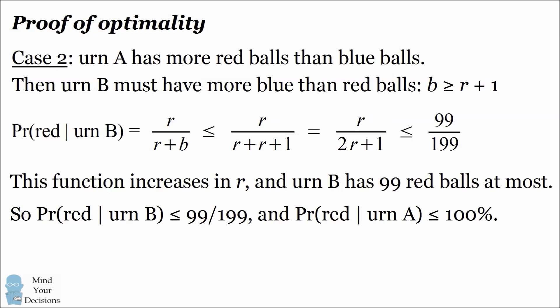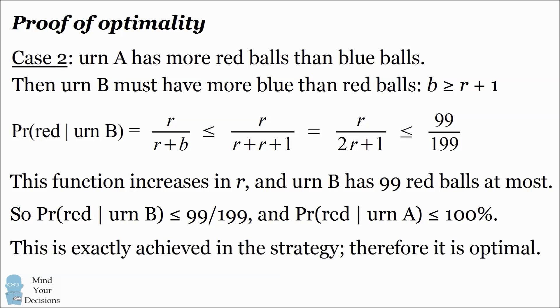And naturally, the probability of selecting a red ball from urn A has to be limited by 100% because our probability cannot be higher than 100%. We exactly achieve these upper bounds in the strategy. We exactly get the highest probability of selecting a red ball from each urn. And therefore, the strategy we describe is optimal.